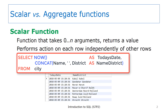In the previous videos, we learned about functions. Those functions that we used are referred to as scalar functions. Note that scalar is spelled ending with L-A-R, not L-E-R. A scalar function is a function that takes zero or more arguments and returns a value. A scalar function performs an action on each row independently of other rows.